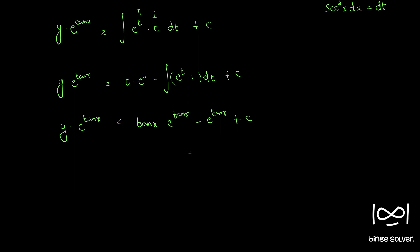Dividing throughout by e^(tan x), the terms cancel and we get the final solution: y = tan x minus 1 plus C · e^(−tan x). This is the final solution to question number 251.